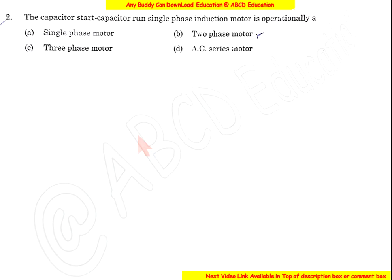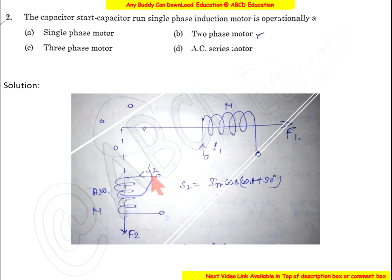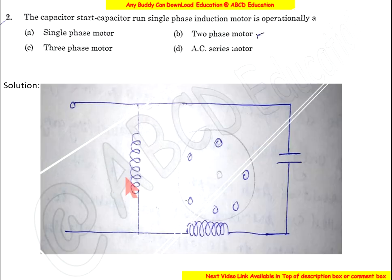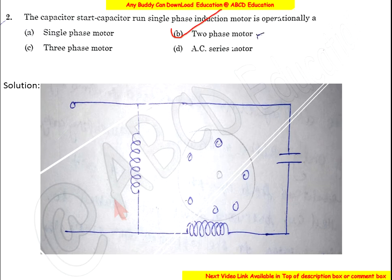Question 2: The capacitor-start capacitor-run single-phase induction motor is operationally a two-phase motor. The auxiliary winding is placed in series with the capacitor, causing it to lead by 90 degrees. This creates two-phase fields that are phased 90 degrees apart from each other. So the correct option is B: two-phase motor.